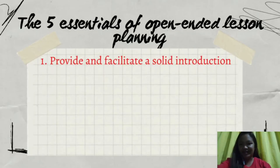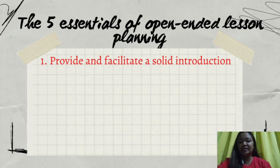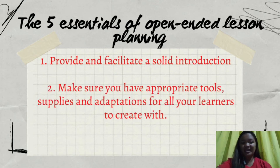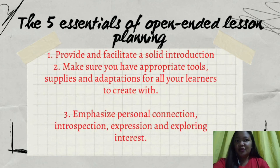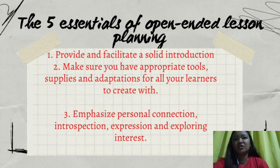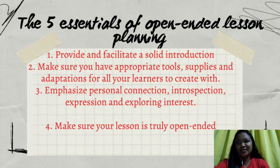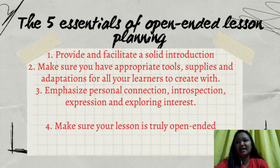The five essentials of open-ended lesson planning: first, provide and facilitate a solid introduction — this includes providing clear objectives and learning targets, making sure you introduce, scaffold, model, and reteach concepts and techniques when appropriate, and providing time to brainstorm, practice, and share. Second, make sure you have appropriate tools, supplies, and adaptations for all your learners. Third, emphasize personal connection, introspection, expression, and exploring interest — really knowing your students and having a fantastic teacher-student relationship can help facilitate meaningful and achievable results. Fourth, make sure your lesson is truly open-ended — results will be unique to each student and related to their interests, skills, and ability level.